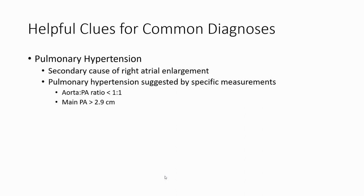The first cause of right atrial enlargement is pulmonary hypertension. To diagnose this cause, we have to determine certain measurements, including the ratio between the aorta and pulmonary artery being less than or equal to one.